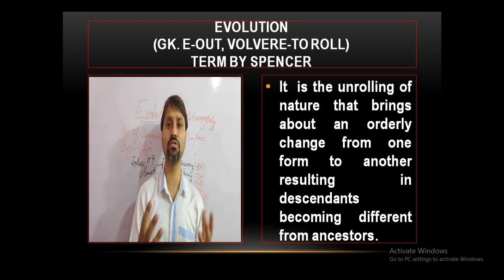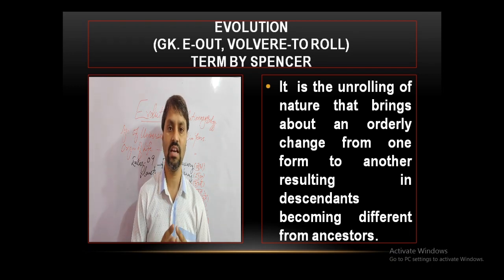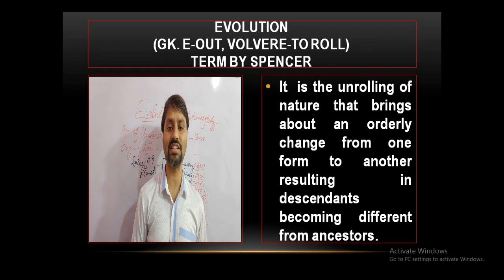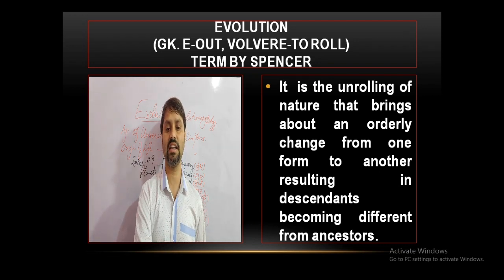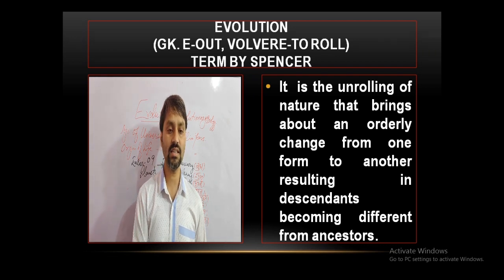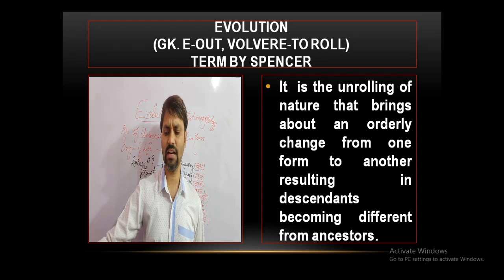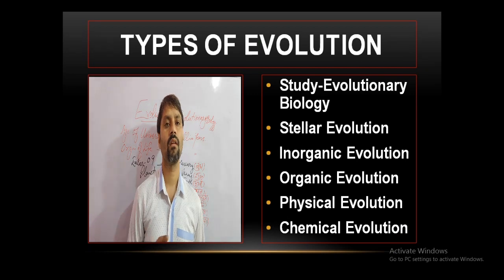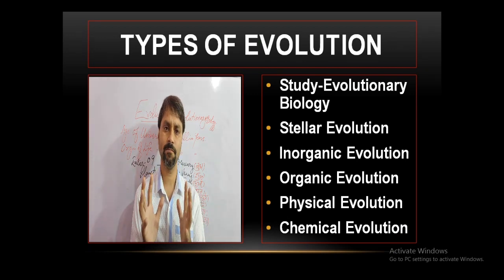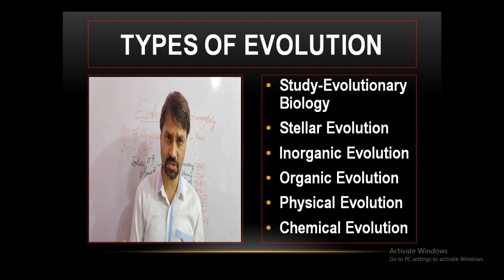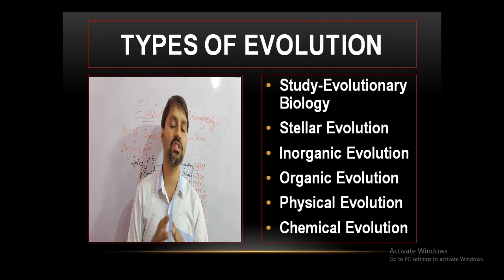Evolution is the unrolling of nature that brings about an orderly change from one form to another, resulting in descendants becoming different from ancestors. The branch of biology that deals with the study of evolution is called evolutionary biology.